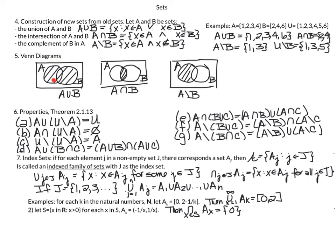Looking at our second overview slide: A union B in a Venn diagram is everything in either circle. The intersection is the overlapping portion — elements in both A and B. A relative complement of B is everything in A that is not in B. We also have these properties in a theorem which may be useful. We already talked about index sets. I believe we are done with the topic, so next we'll have some review problems.